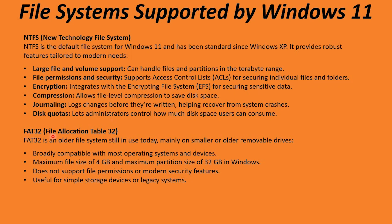FAT32 — File Allocation Table 32 — has been around for a long time and is still in use today. It's broadly compatible with most operating systems and devices, but has a maximum file size of 4 gigabytes and a maximum partition size of 32 gigabytes. For example, if you format a flash drive as FAT32 and try to copy a 5 GB file to it, it won't work — you'll need to use a different format. FAT32 does not support file permissions or modern security features like NTFS, but it's still useful for simple storage devices like flash drives.